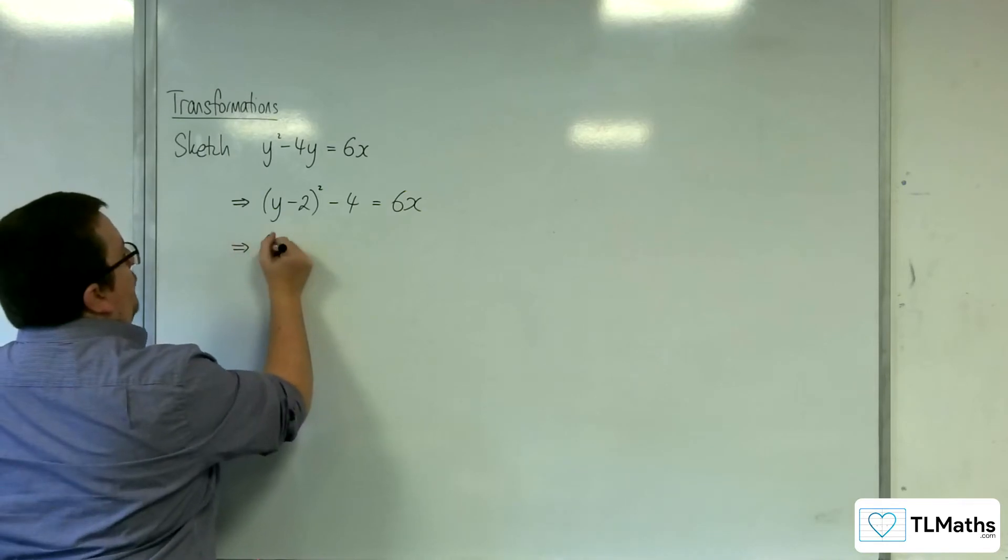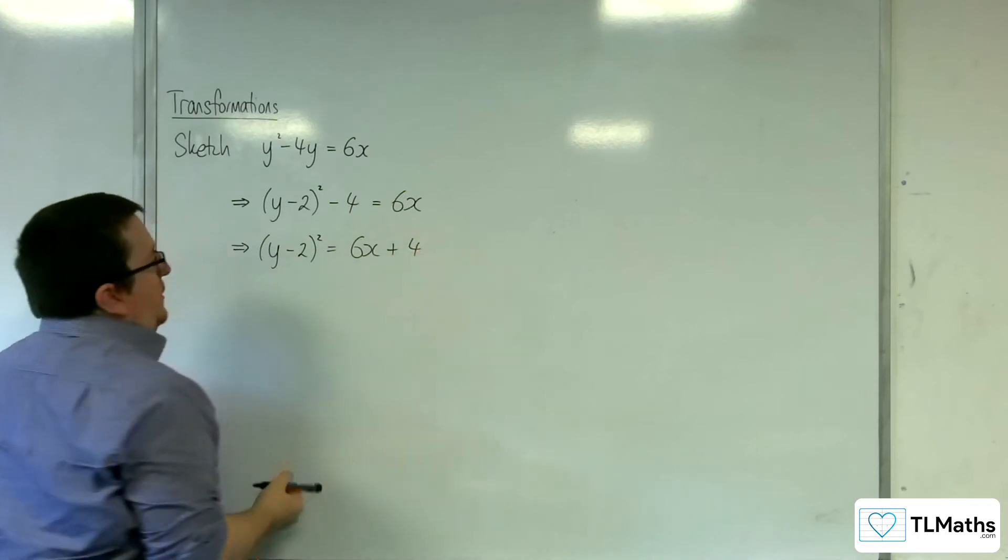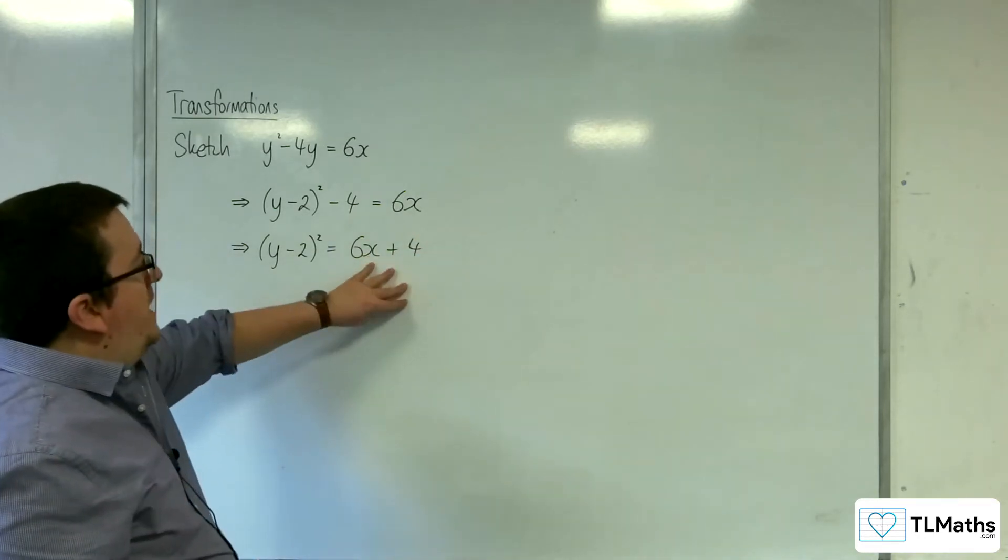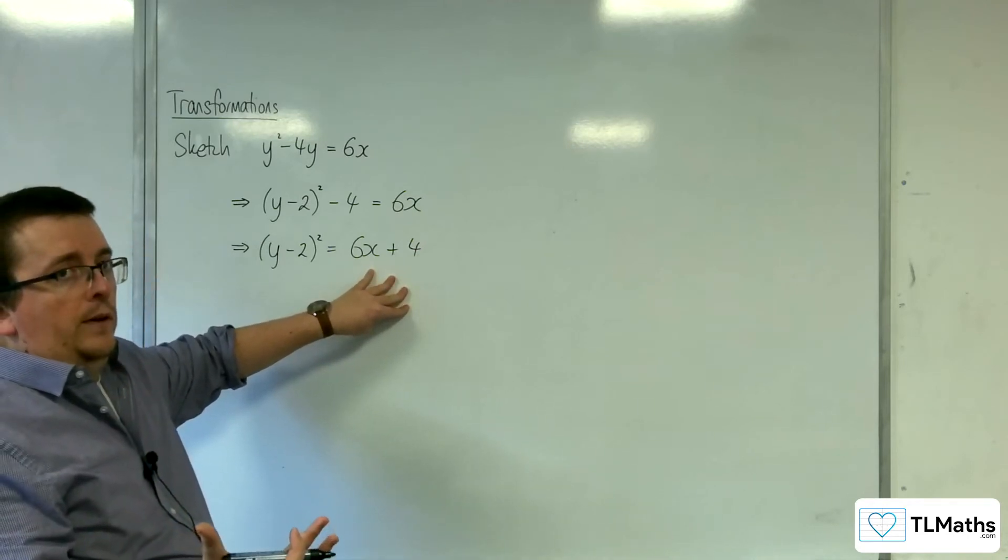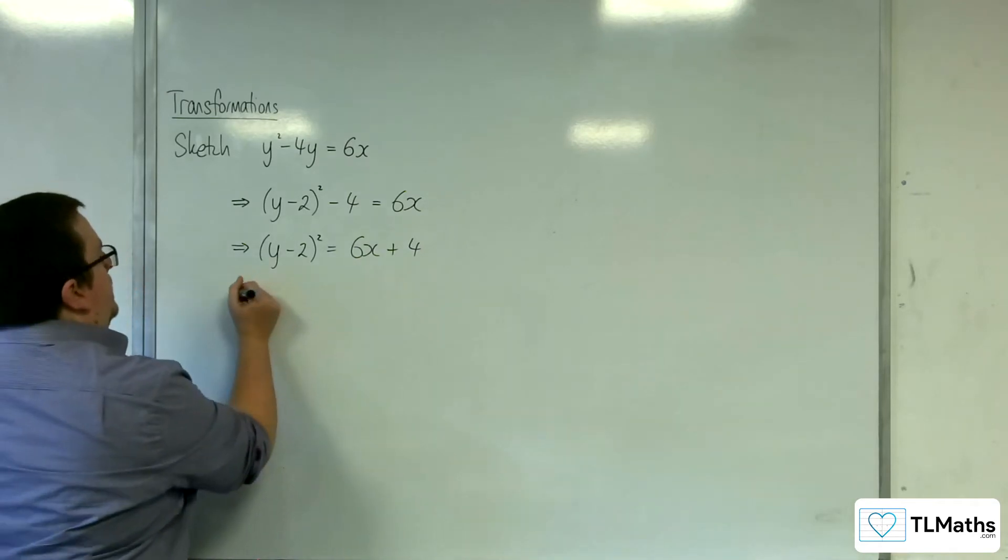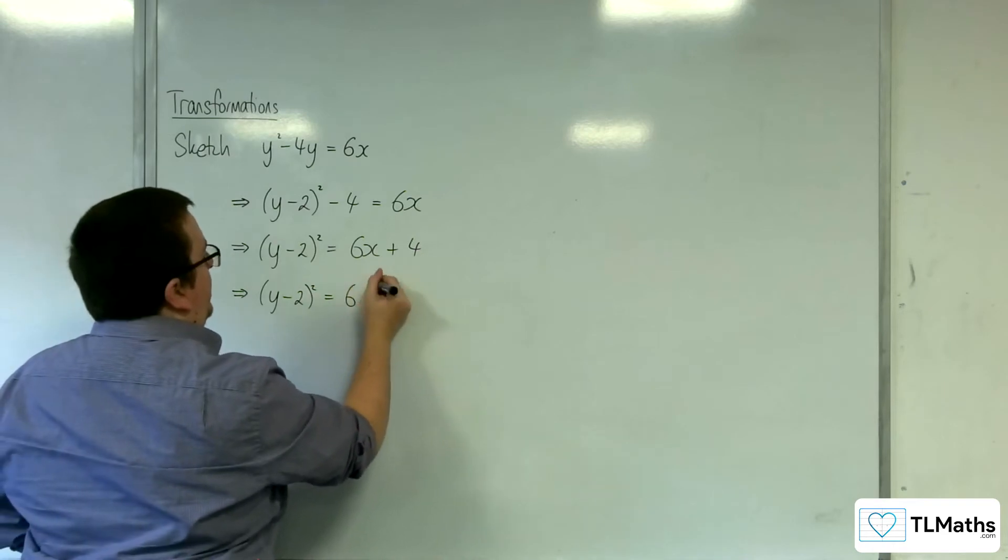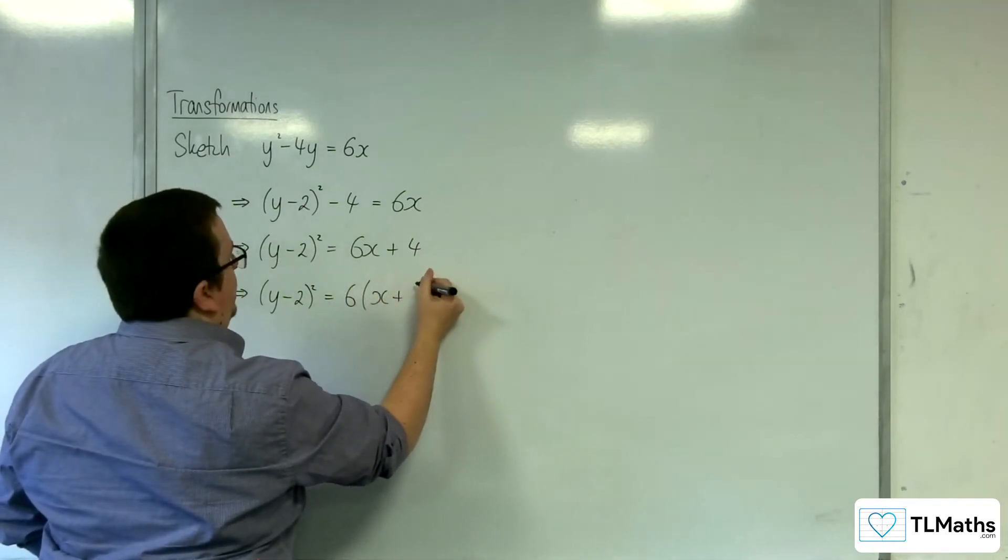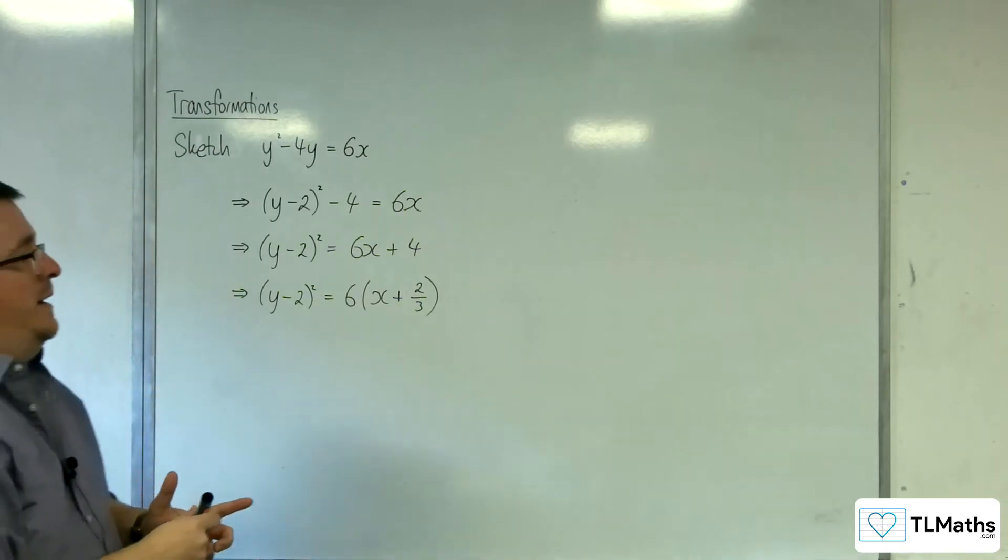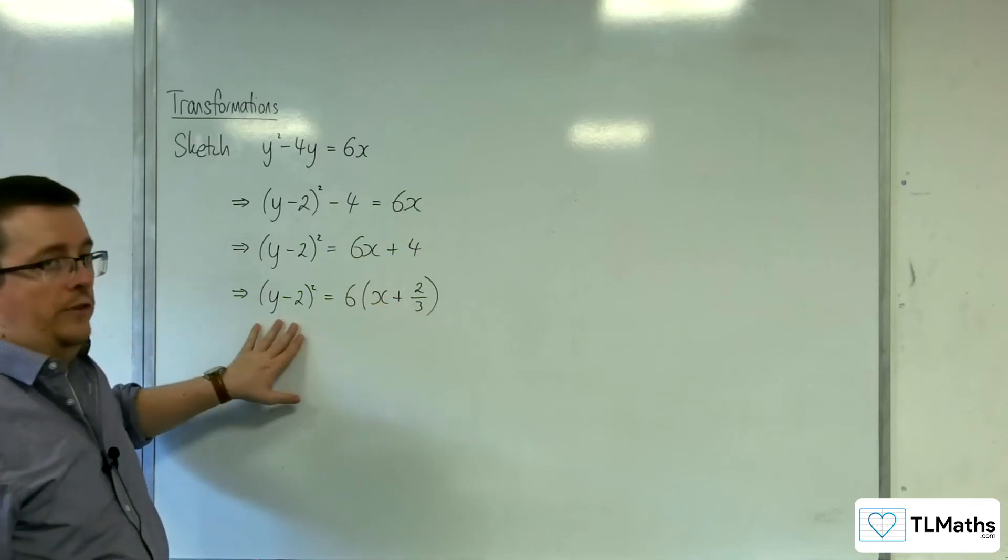If I add the 4 to both sides, we're now in a situation similar to the last two videos, where we've got this right-hand side that I can then factorise to see what transformation has affected the x direction. So we've got y minus 2 squared is equal to, pull the 6 out, and have x plus 4 over 6, which is 2 thirds.